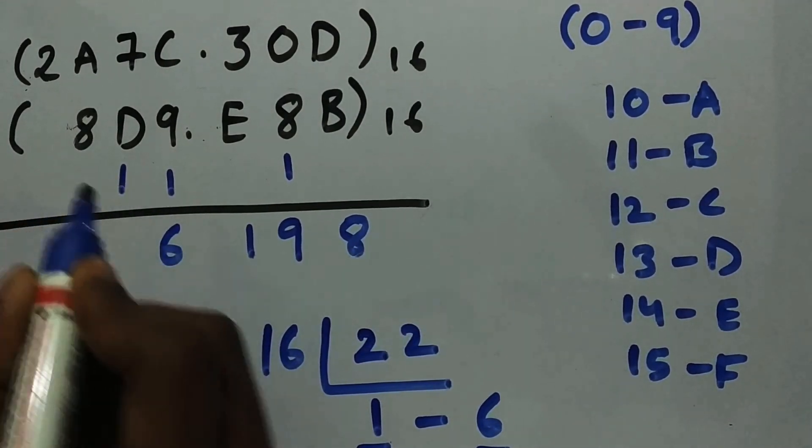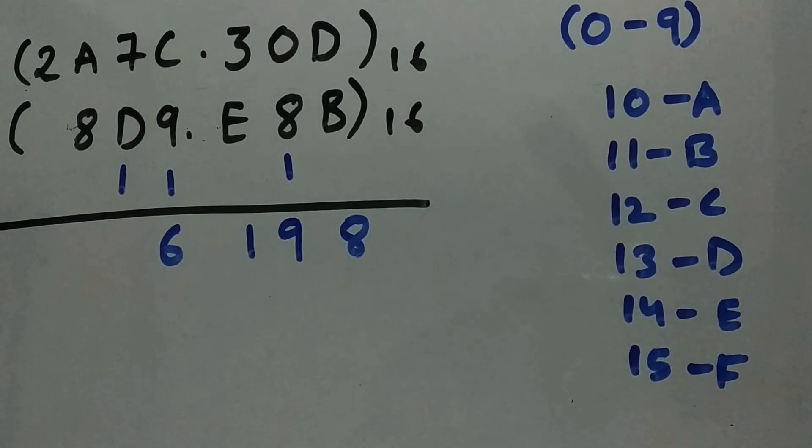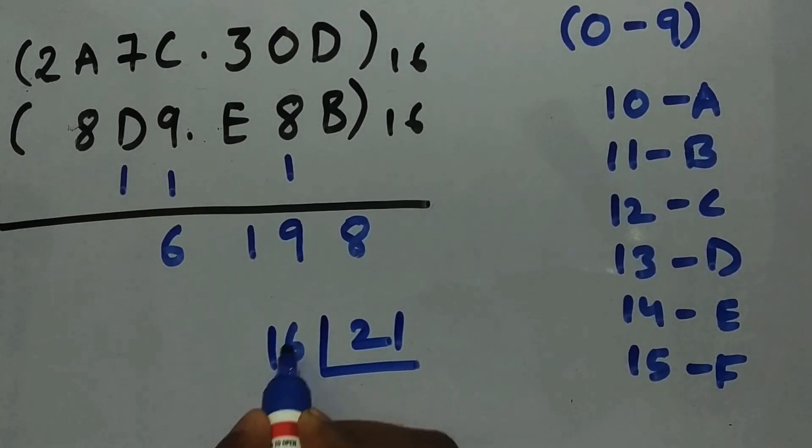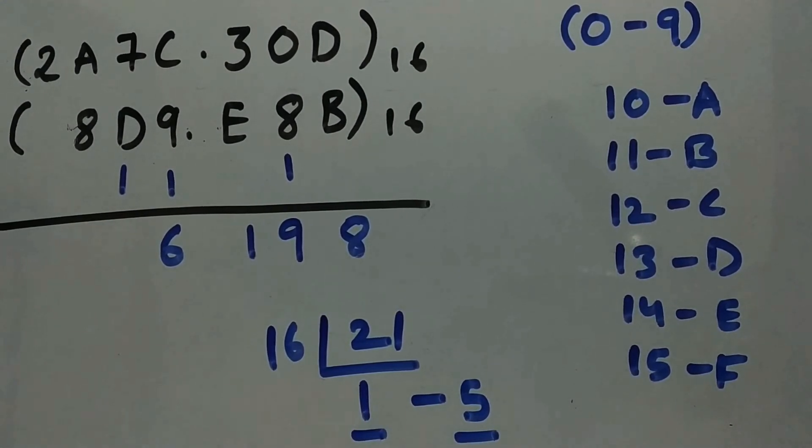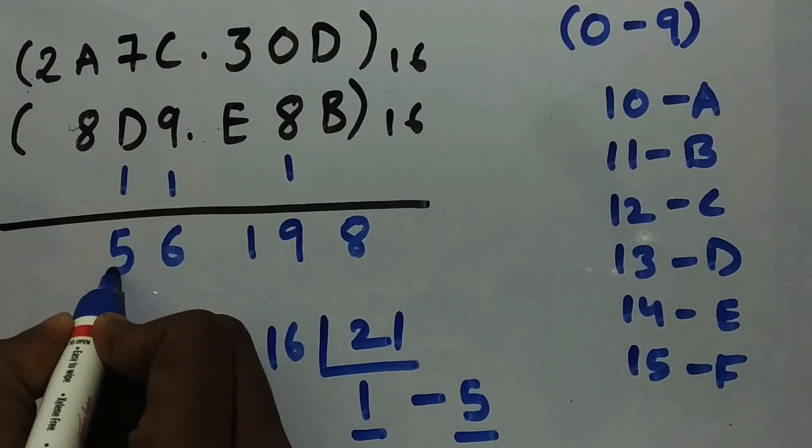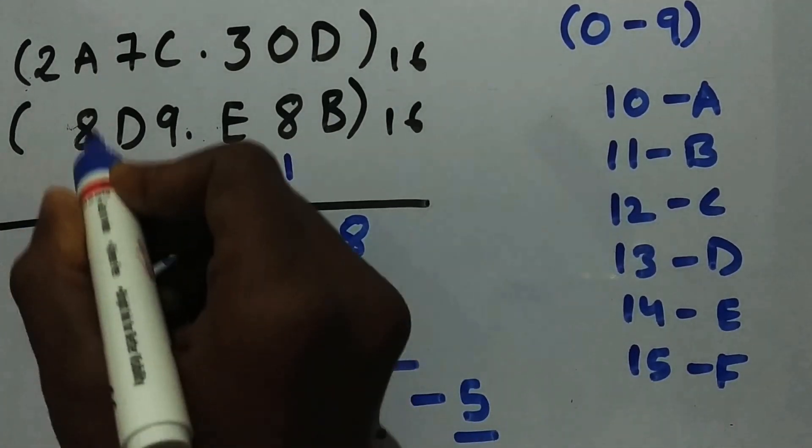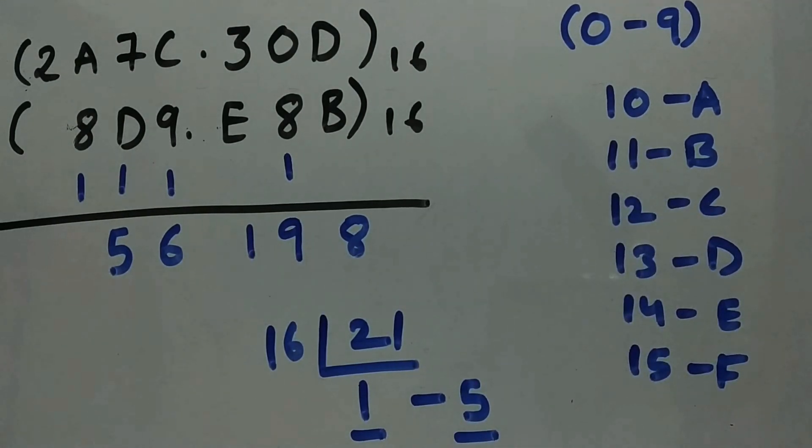carried over here. So now 7 plus D plus 1: D is 13, so 13 plus 7 is 20, plus 1 is 21. We need to convert 21 into hexadecimal: 16 goes 1 time and 5 remainder. This is sum and this is carry. So sum needs to be written over here as 5, and carry is 1. Now A plus 8 plus 1: A is 10, so it's 19. Convert